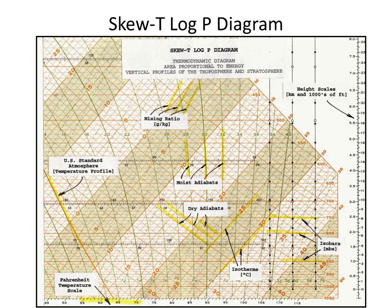The weather data collected by the balloon can be displayed on the Skew-T Log P diagram. What you see here is the Skew-T Log P with no weather data plotted on it yet. This diagram is a thermodynamic diagram, meaning it helps describe our atmosphere's pressure and temperature structure.